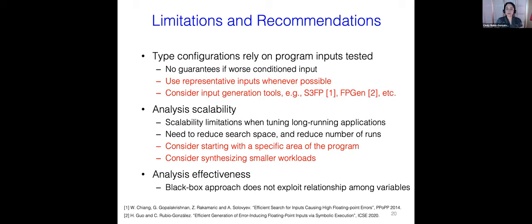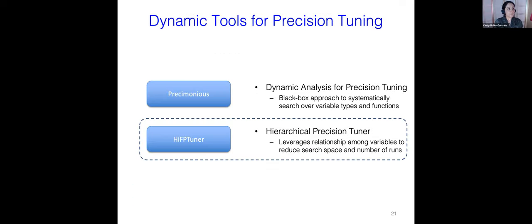The configurations found by Presimonials produce decent speedups, but there is room for improvement. In particular, Presimonials is a black box approach that does not exploit the relationship among variables. A natural question is: can we do better? Can we leverage the program structure to find configurations that lead to higher speedup? In the remaining talk, I will describe HiFP Tuner, which considers the relationship among variables to reduce the search space and the number of runs needed during the tuning process.